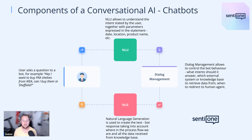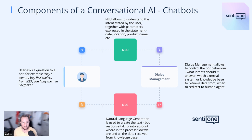We can control what kind of response we're going to deliver, where we're obtaining the information from — whether it's directly from the IKEA database, knowledge base, or via some other integration — or maybe it's a more complex question and you want to redirect to an agent. Then we generate that response back, whether it's voice or chat, taking into account all these elements — the meaning, the content, the dialogue — and deliver an accurate response back to the user.